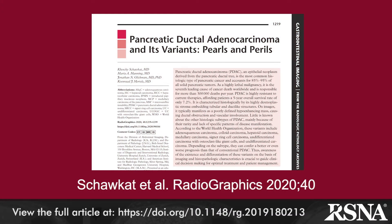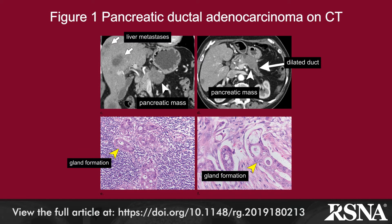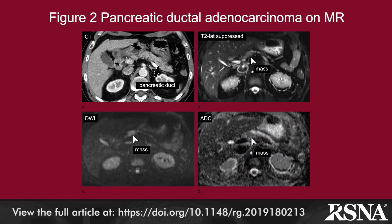In this gastrointestinal article from the American Institute for Radiologic Pathology and Beth Israel Deaconess Hospital in Boston, Massachusetts, Shawkat and colleagues review the imaging of pancreatic ductal adenocarcinoma and its variants. Typical features include an indistinct, poorly-enhancing focal mass that obstructs pancreatic and bile ducts. MR is useful for detecting isoattenuating tumors, particularly those producing pancreatic duct dilatation, as MR has superior contrast resolution.